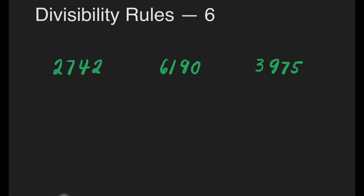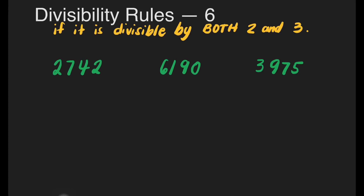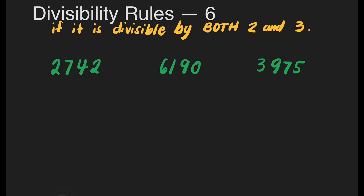Now let's have divisibility rules for 6. A number is divisible by 6 if it is divisible by both 2 and 3 — meaning it has to be an even number and divisible by 3. We know a number is divisible by 3 when we add all the digits and the sum is divisible by 3.